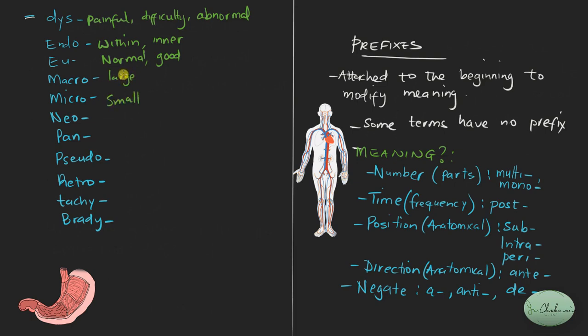Micro means small. Like we have macrocytic anemia meaning someone has anemia and that anemia manifests as large or enlarged red blood cells. And then we have microcytic anemia. Neo means new. Neoplasm, new growth, for instance. Pan means all, like pancytopenia, meaning that all cell lines are depreciated or are low in number. Pseudo means false, like pseudocyst, meaning a false cyst, a structure that looks like a cyst, but it's not actually a cyst. We have retro. Retro means backward or behind.